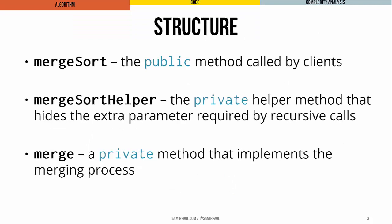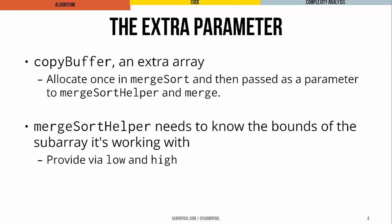We might structure this using three methods. We'll start with a merge sort method — the public method that clients call. We also have a helper method, merge sort helper, which allows us to hide an extra parameter that we don't want clients to know about, but that we do want to use as we're actually doing the sorting. Finally, we have a merge helper method that takes two sorted subarrays and gives back one single sorted overall array. The merging process uses an extra array called copy buffer. We want to avoid the overhead of allocating and de-allocating it every time, so we allocate the copy buffer just once in merge sort and pass it to merge sort helper and merge whenever needed.